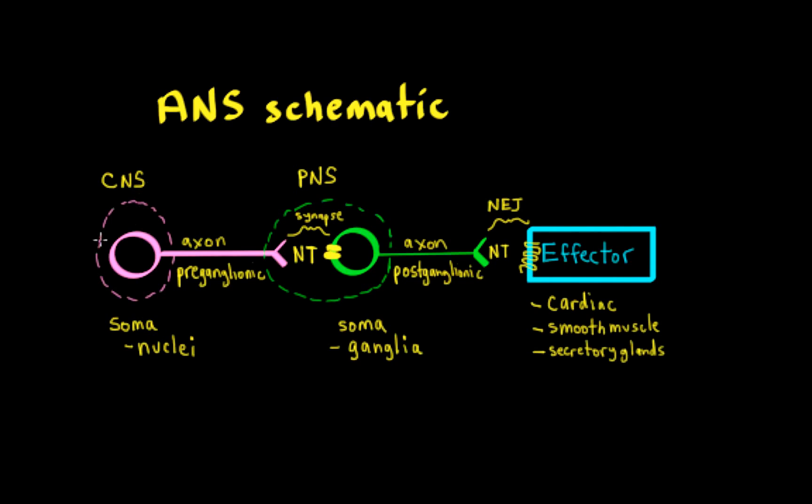So the first one on the left here, in pink, the somas are found in the central nervous system, which is considered brain and spinal cord. And when we have cell bodies or somas found in the central nervous system, they are part of what's called a nucleus, or plural nuclei.